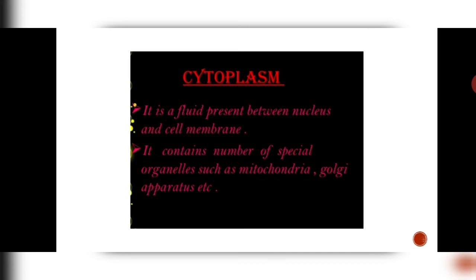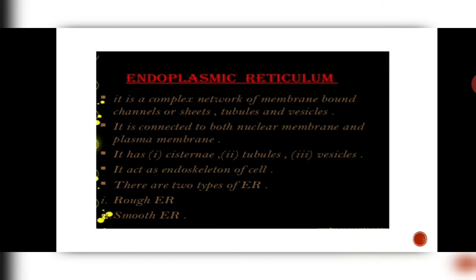Next is the cytoplasm. It is the fluid present between the nucleus and the cell membrane. It contains a number of special organelles such as mitochondria, Golgi apparatus, vacuoles, ribosomes, lysosomes, etc. All these structures are contained inside the cytoplasm. Let us discuss them one by one.